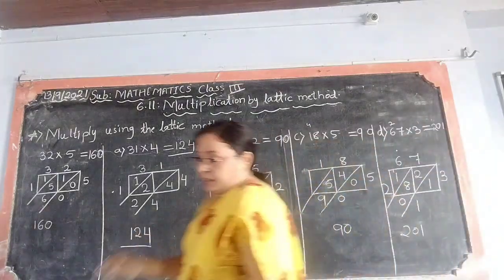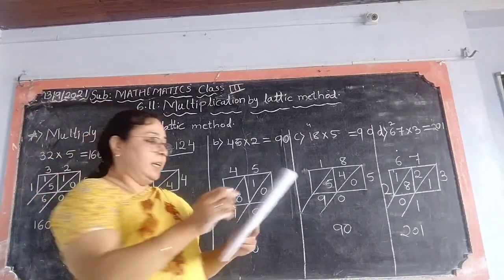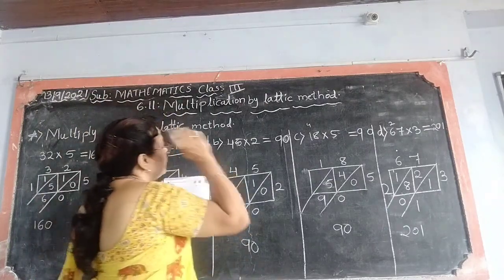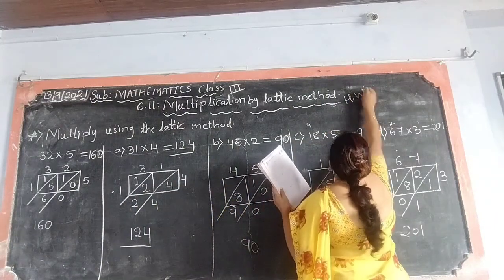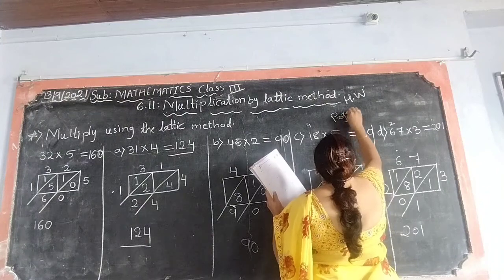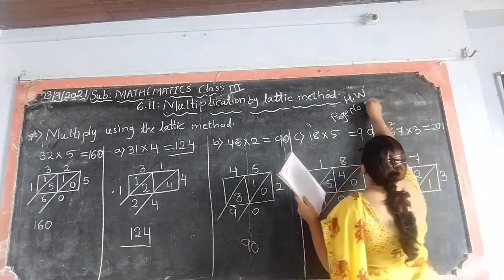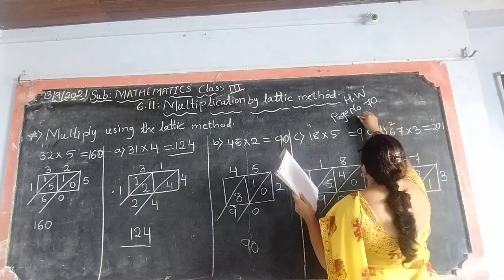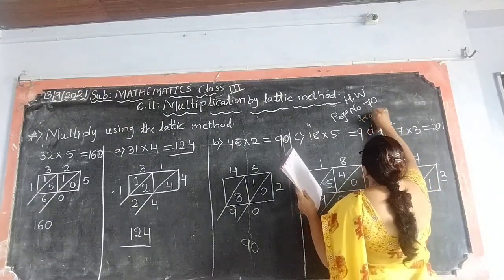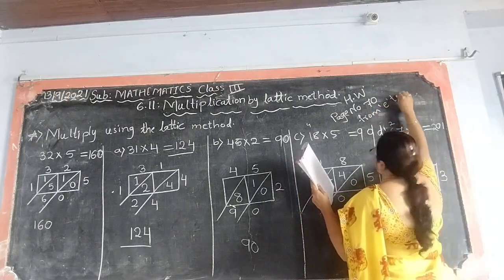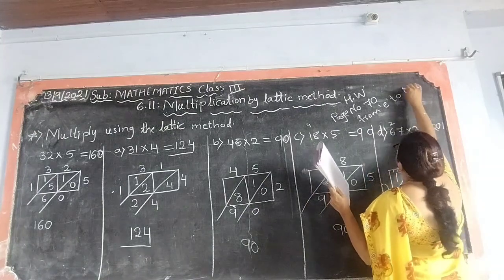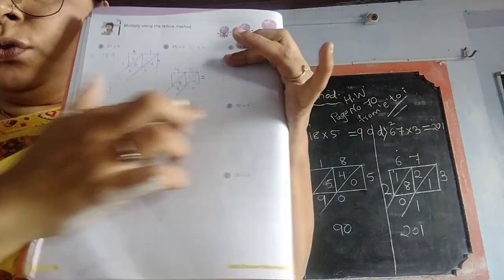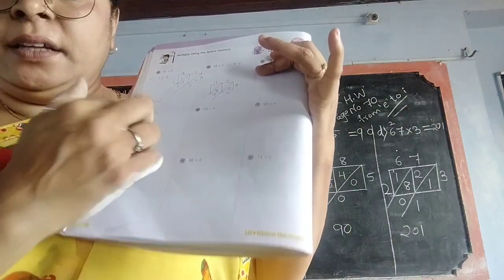Now, see here, children. We are, in this exercise, we have done A, B, C, D. Till E, we have done. Means, page number. Your homework is, you have to practice page number 70, from E to J. This you have to do. See here, already here. This you have to do. E, F, G, H, I. I hope you understood.